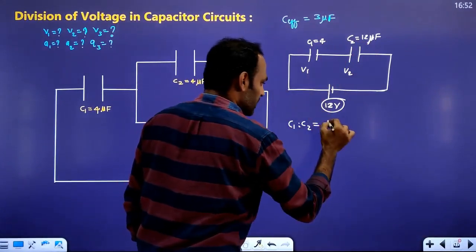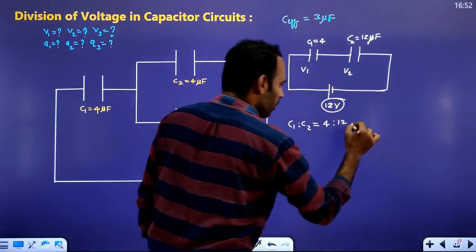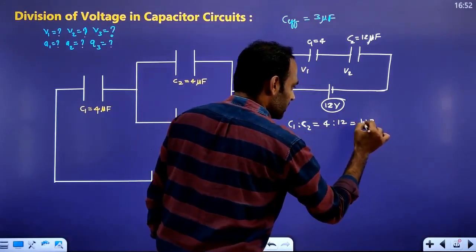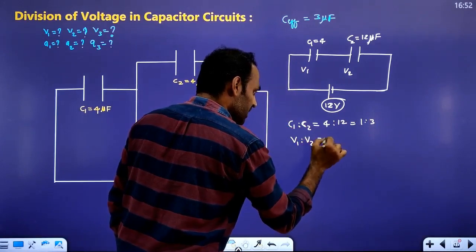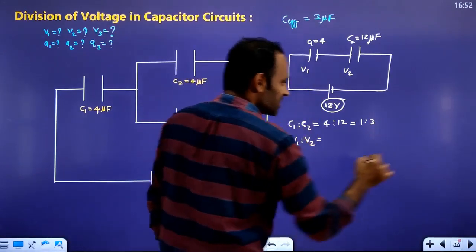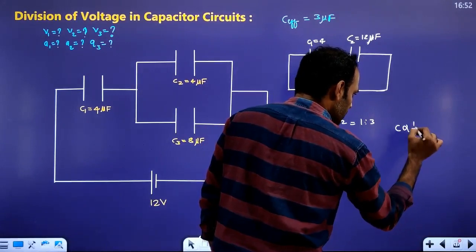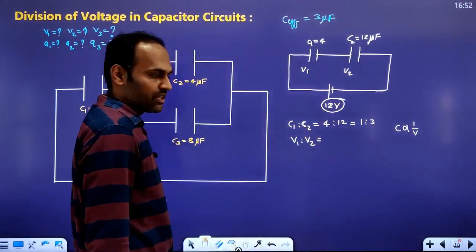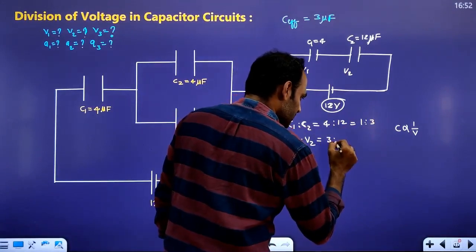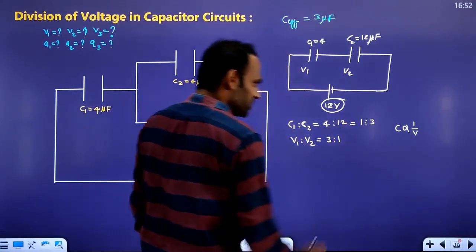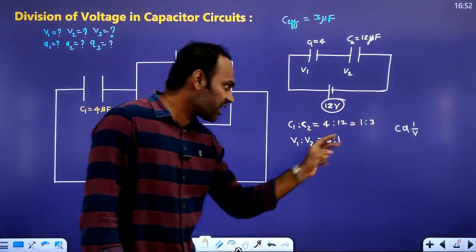We get the ratio of C1 to C2: that is 4 to 12, which simplifies to 1 to 3. So V1 to V2 ratio is 3 to 1 — because capacitance and voltage are inversely proportional. The capacitors are in the reverse ratio of the voltage, so C ratio 1:3 gives V ratio 3:1.